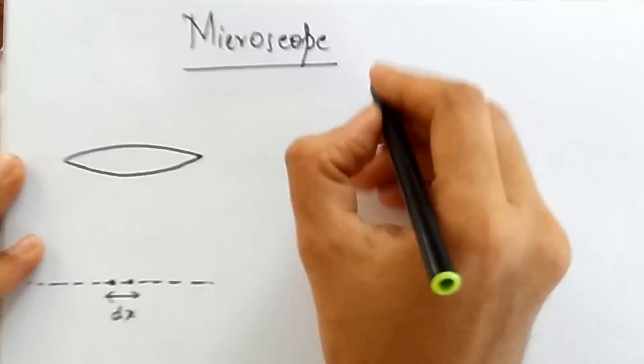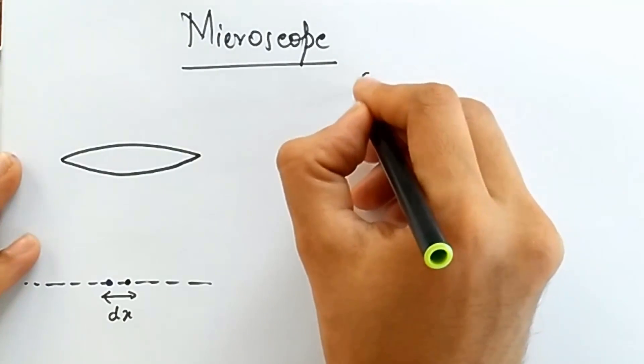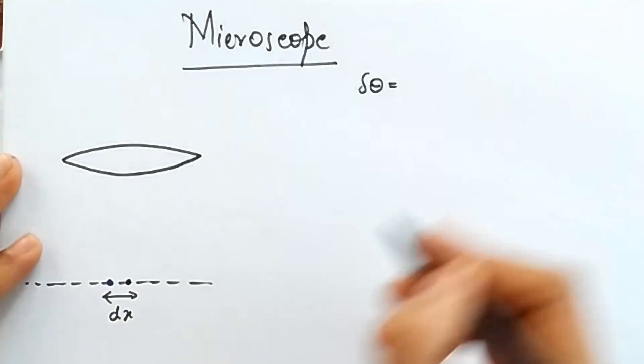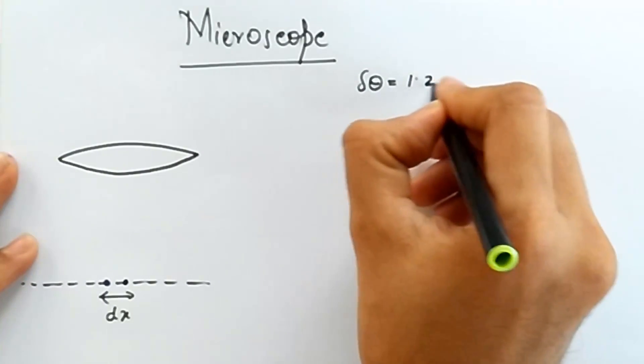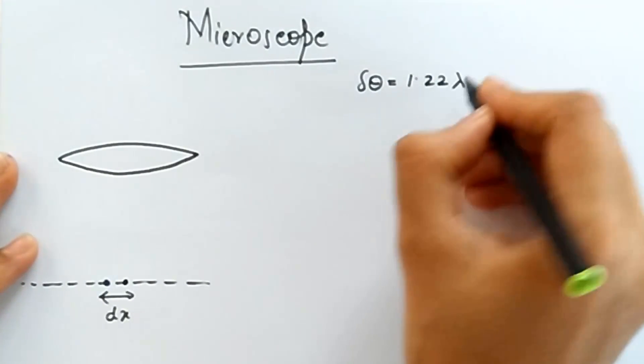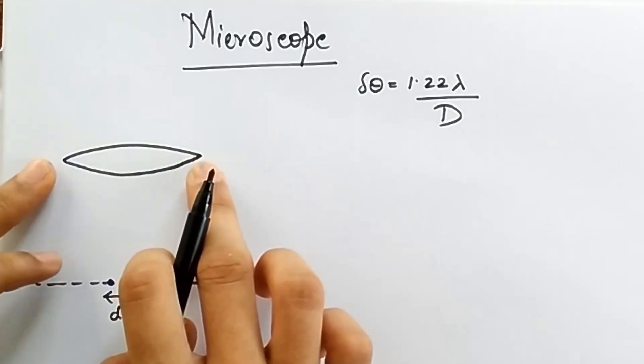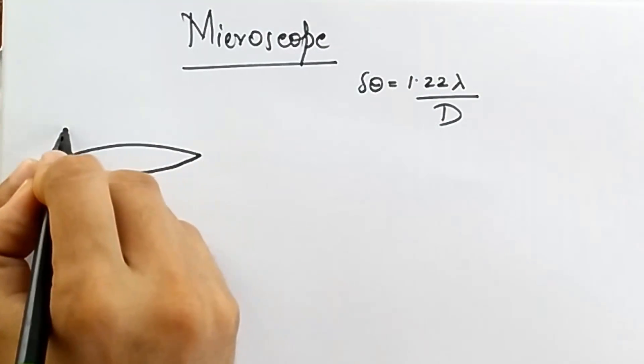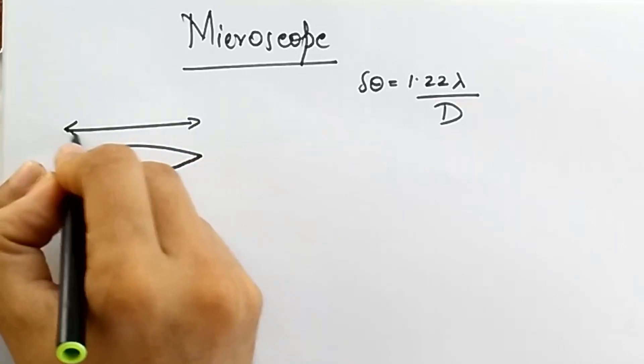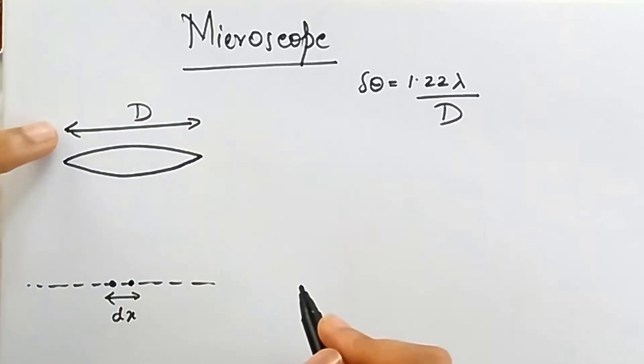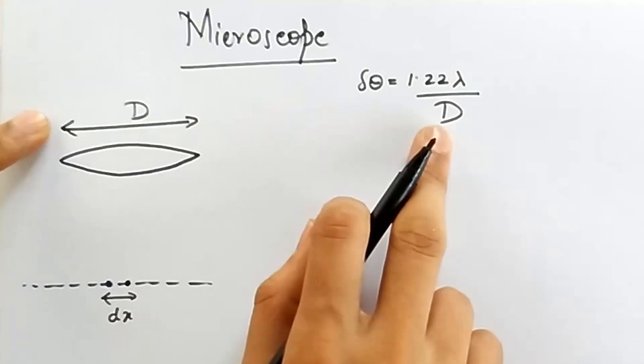Well, we again look at the same thing. Remember, the smallest angle that can be subtended is going to be 1.22 lambda divided by D, where D is the diameter of the circular aperture. Now here, diameter becomes this one, and so all I have to do now is calculate how much the diameter is and stick it over here.